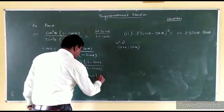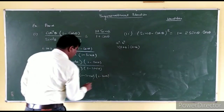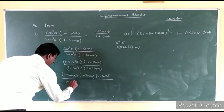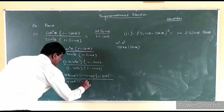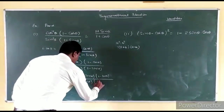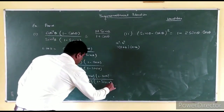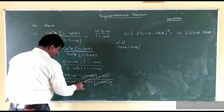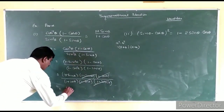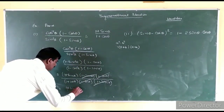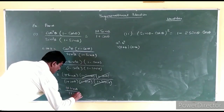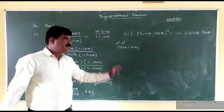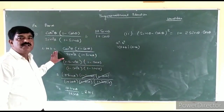Here we get 1 minus cos theta, and similarly using a square minus b square, we get (1 + cos theta)(1 - cos theta) into (1 - sin theta). Then (1 + sin theta) upon (1 + cos theta) is equal to the right-hand side. You will be able to follow along with these steps.